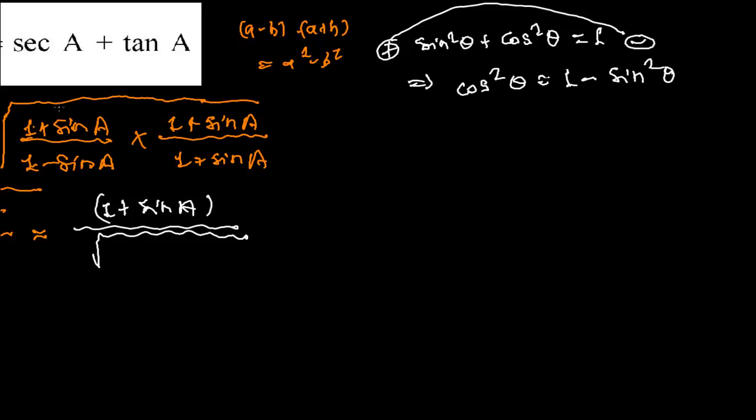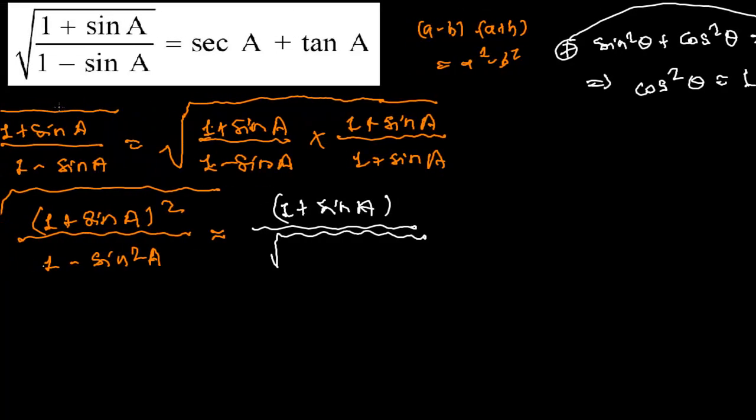Cos squared theta equals to 1 minus sine squared theta, so that exactly I was telling you. In the place of 1 minus sine squared theta I can write now cos squared theta.